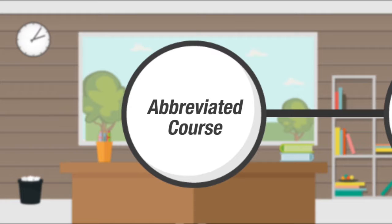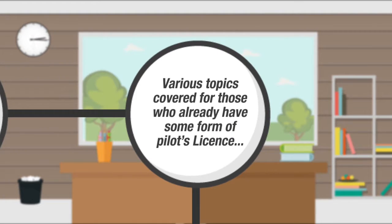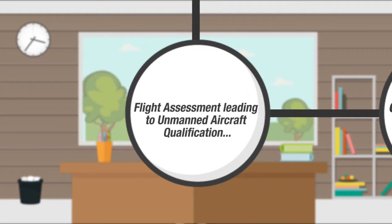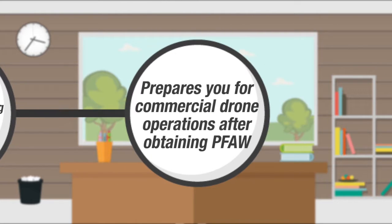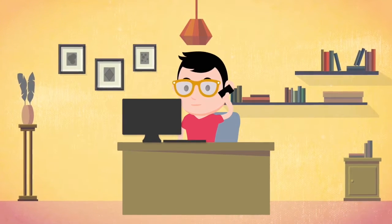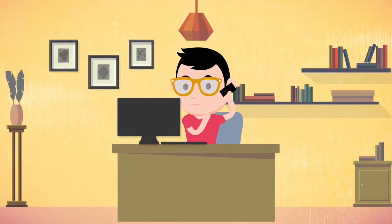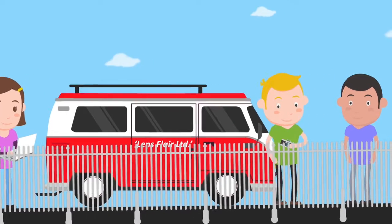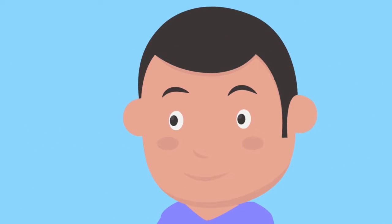Thirdly, there is the abbreviated course. This is a two-day course consisting of one day of theory and then one day for the flight assessment. Aimed at individuals who already hold some form of CAA approved pilot's license, and covering topics including the differences between manned and unmanned aviation, this course prepares you for commercial drone operations. Charlie thinks this would suit Jamal, an experienced pilot who needs to brush up on his understanding of rules and regulations regarding drones and get professionally qualified for drone flight.